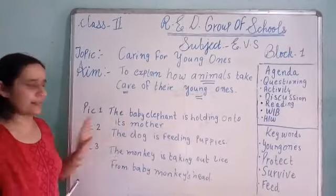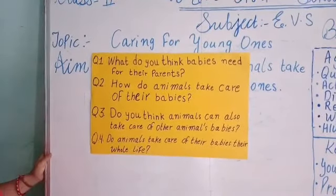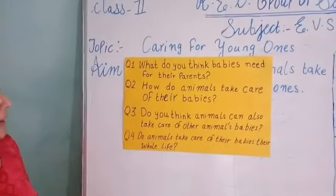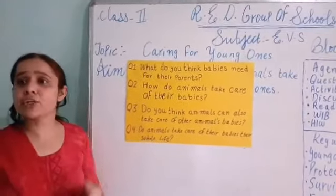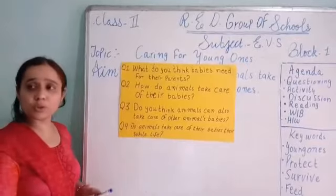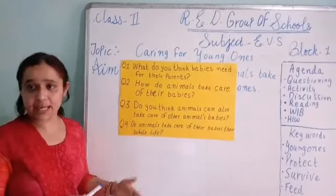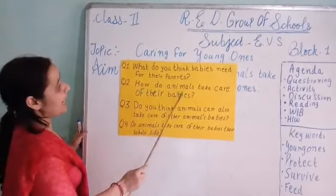Very good. Now, ready for questioning and discussion part. What do you think babies need from their parents? Babies cannot take care of themselves. They need to be fed, they need to be protected. Parents, like humans, give their children a place to live — rehne ke liye jagah dete hain — food to eat, and clothes to wear.